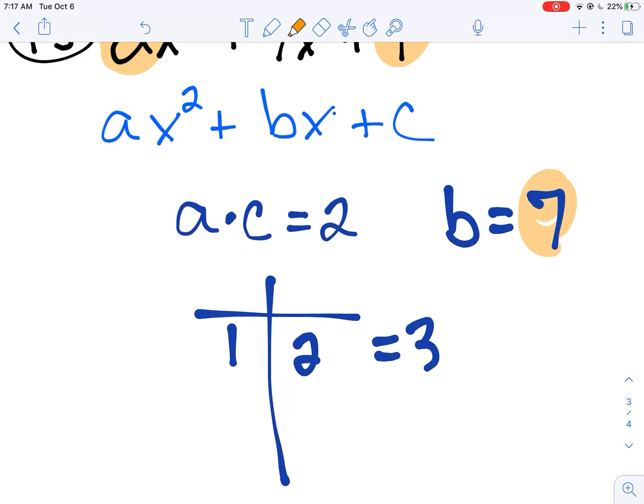Now the thing is, when we add up 1 and 2, we get 3. We don't get 7. Did you do something wrong? No, you didn't.